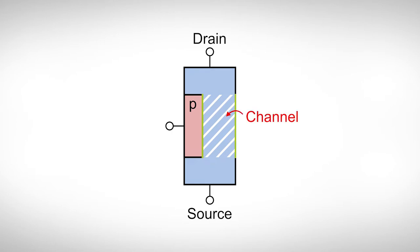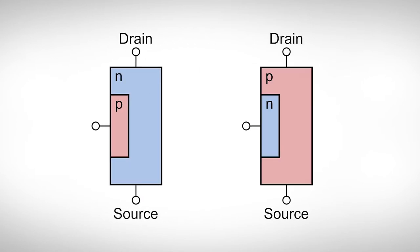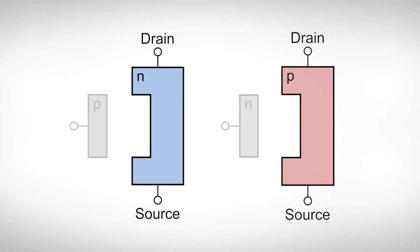Drain and source are conductively connected. A JFET is therefore self-conducting, and with the applied voltage we can increase the resistivity of the channel. Depending on which doping we used for this region, we call the transistor either an N-channel or a P-channel JFET.